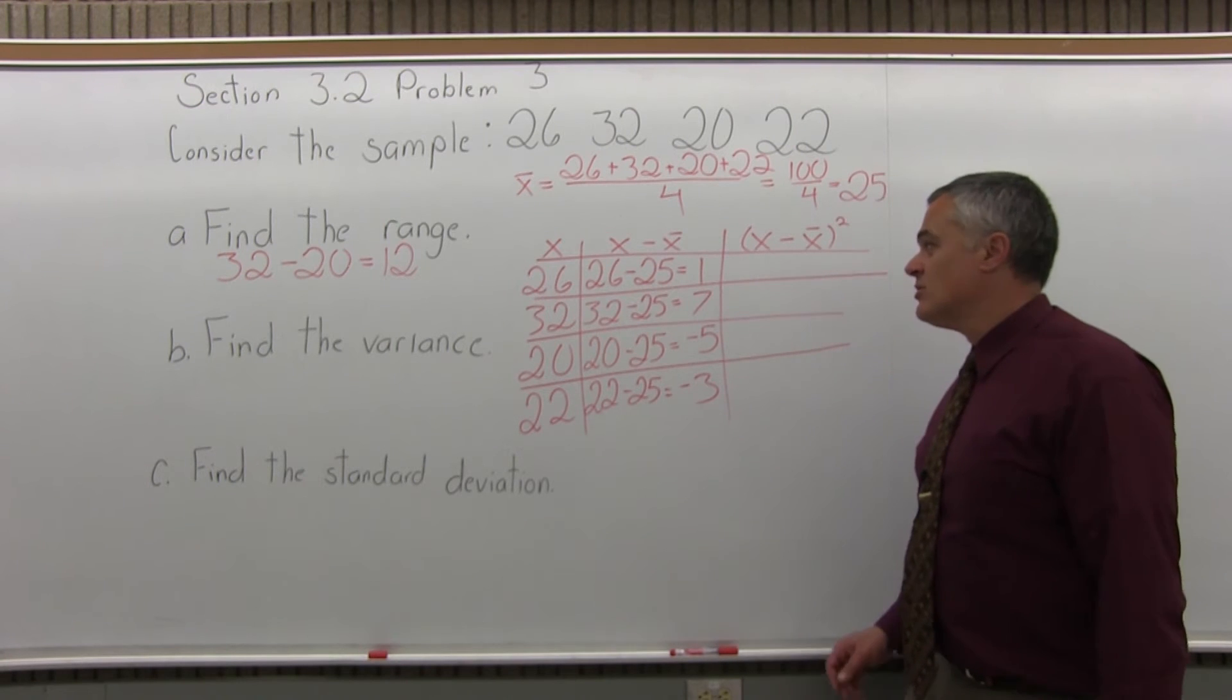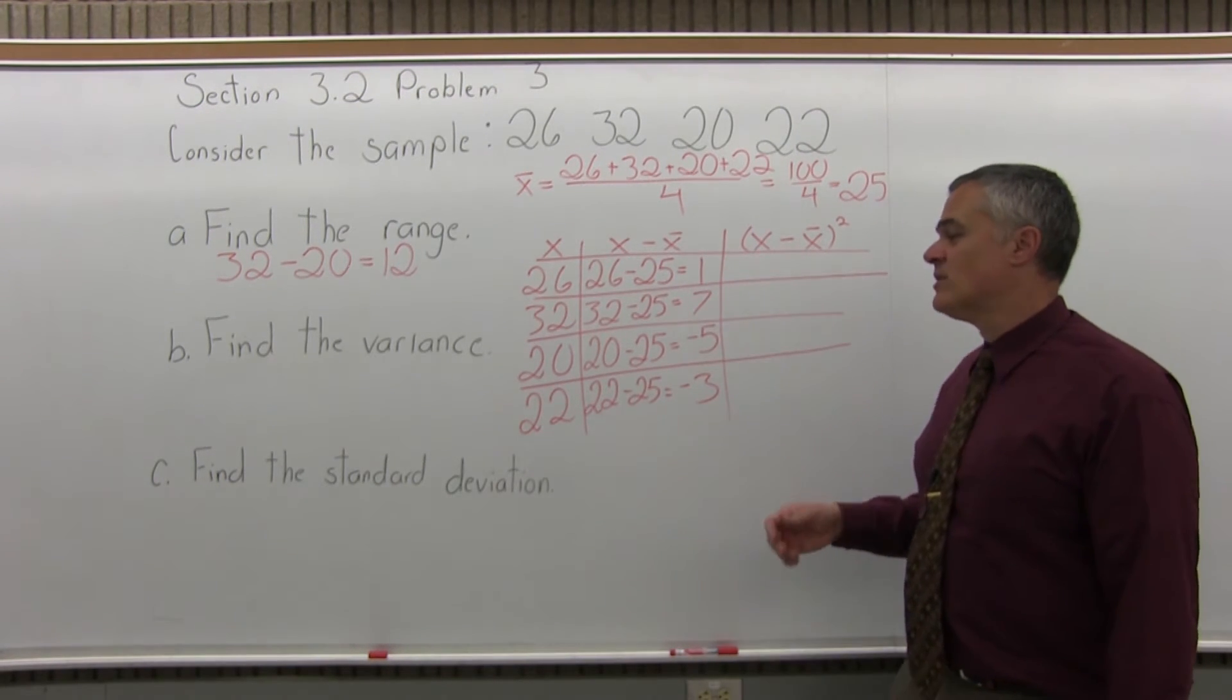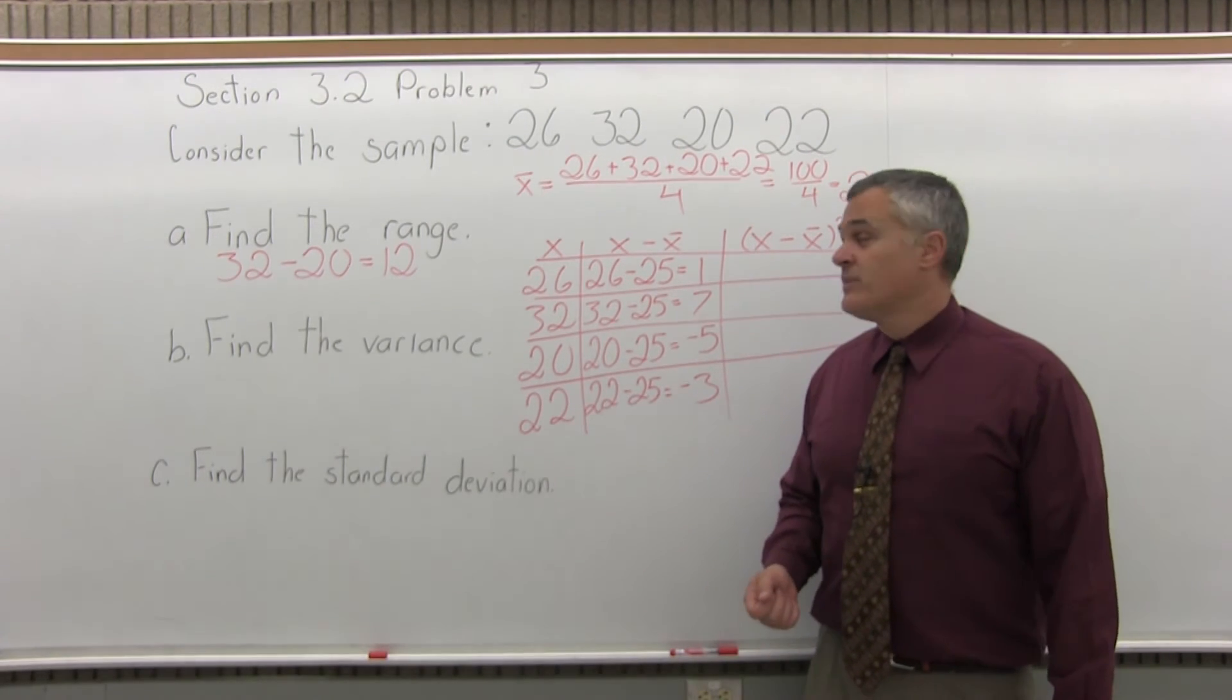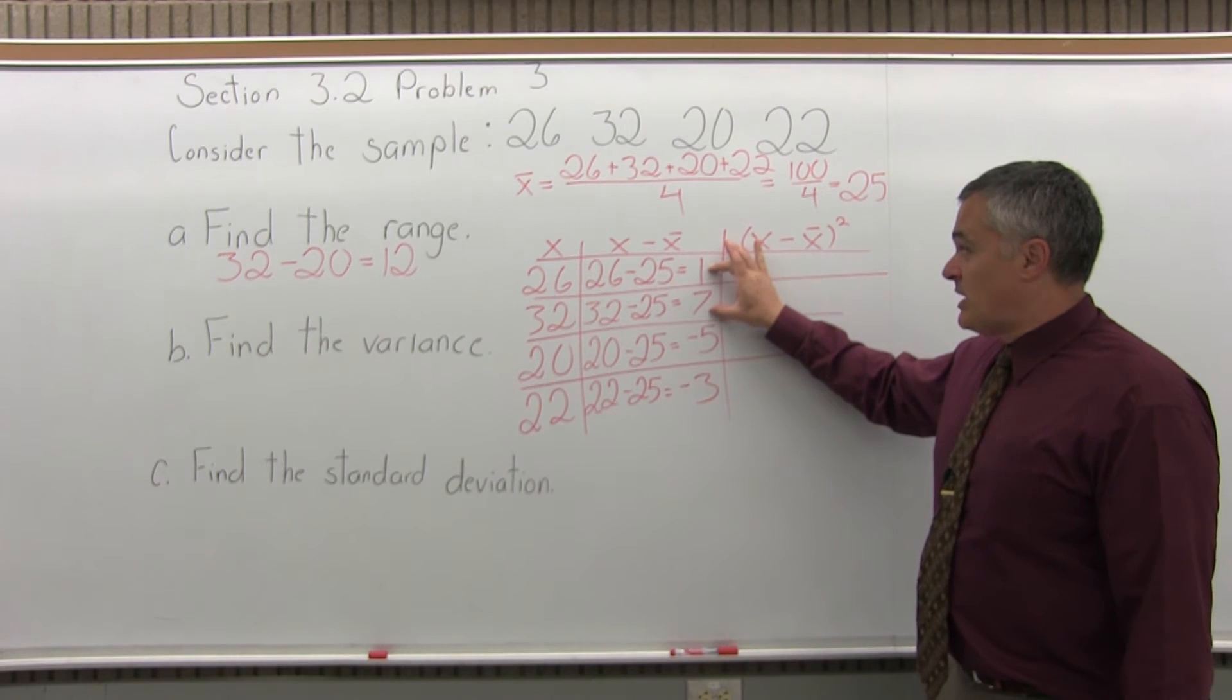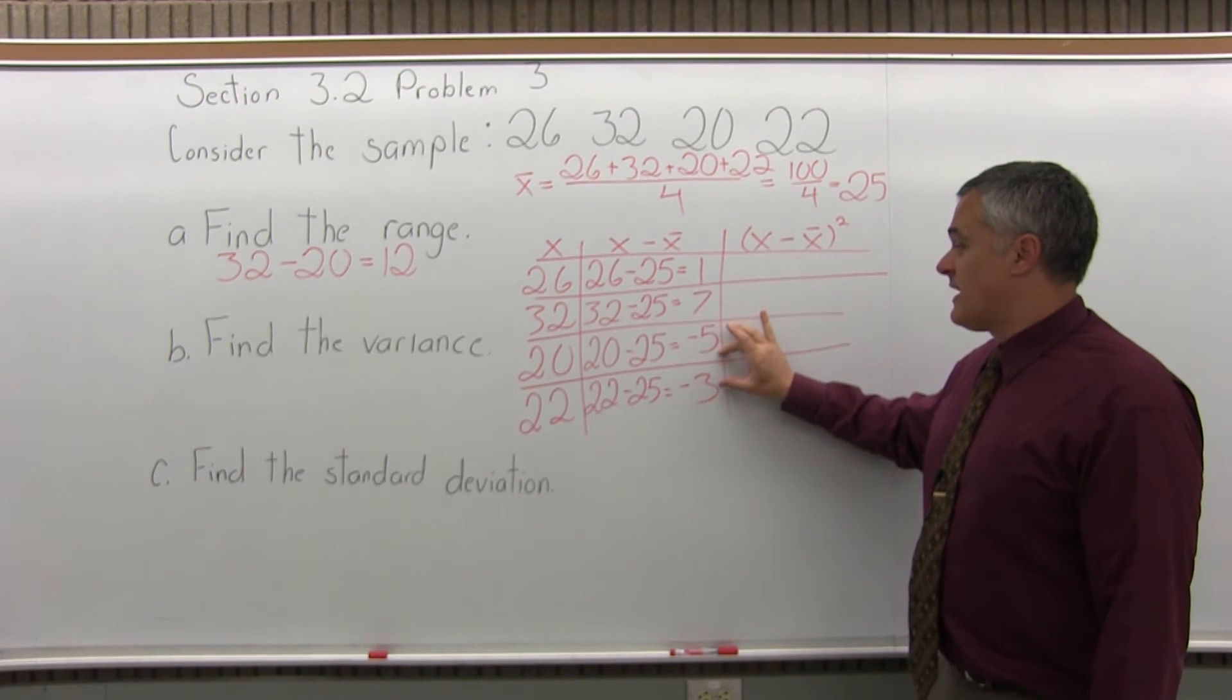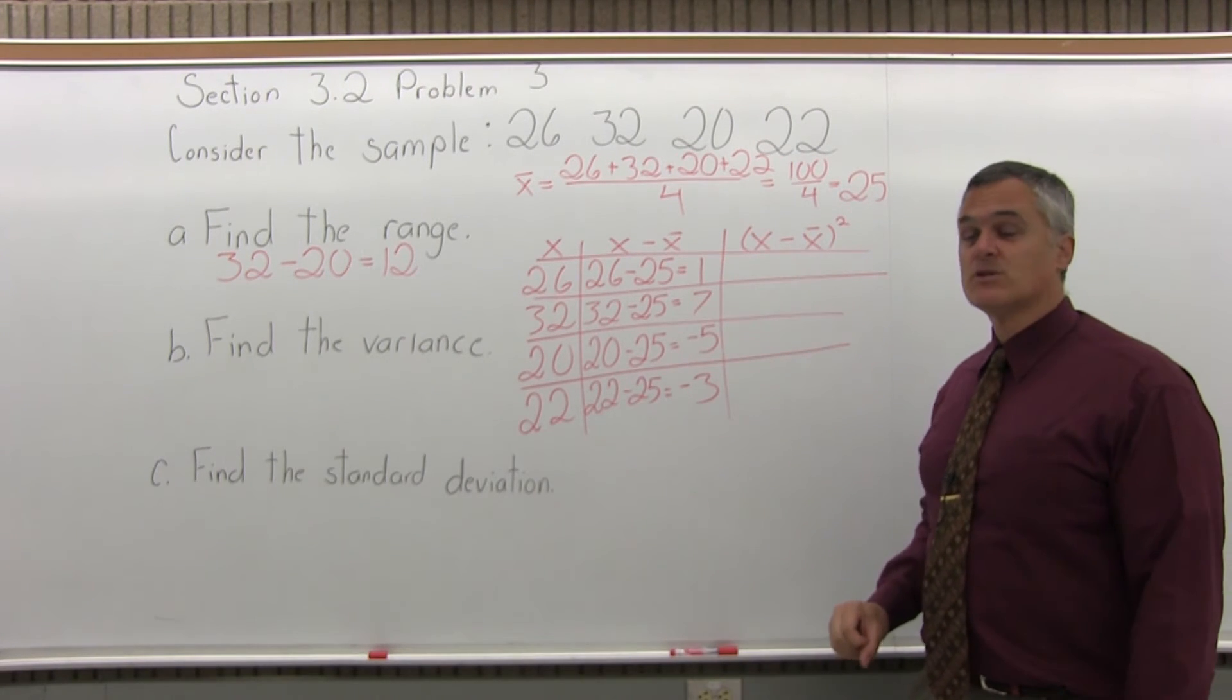Now, as an optional thing you can do at this point is see if the middle column has a total of 0. That's a good check. If you don't have 0 as a total of your middle column, you made a mistake somewhere. So if I combine, I have two positive values, 1 and 7 for positive 8, two negative values, negative 5 and negative 3 for negative 8, and if I add those up, I do get a total of 0, which is a good sign.